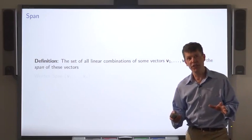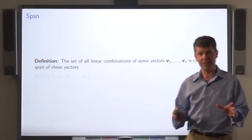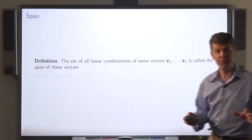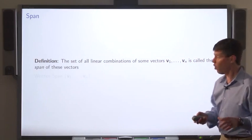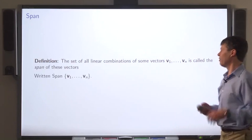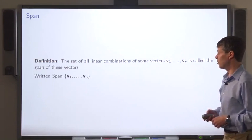The set of all linear combinations of vectors v1 through vn is called the span of those vectors.